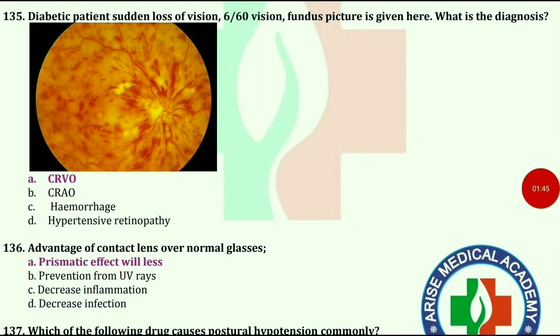Diabetic patient with sudden loss of vision 6/60. Fundus picture is given here. What is the diagnosis? The answer is CRVO.